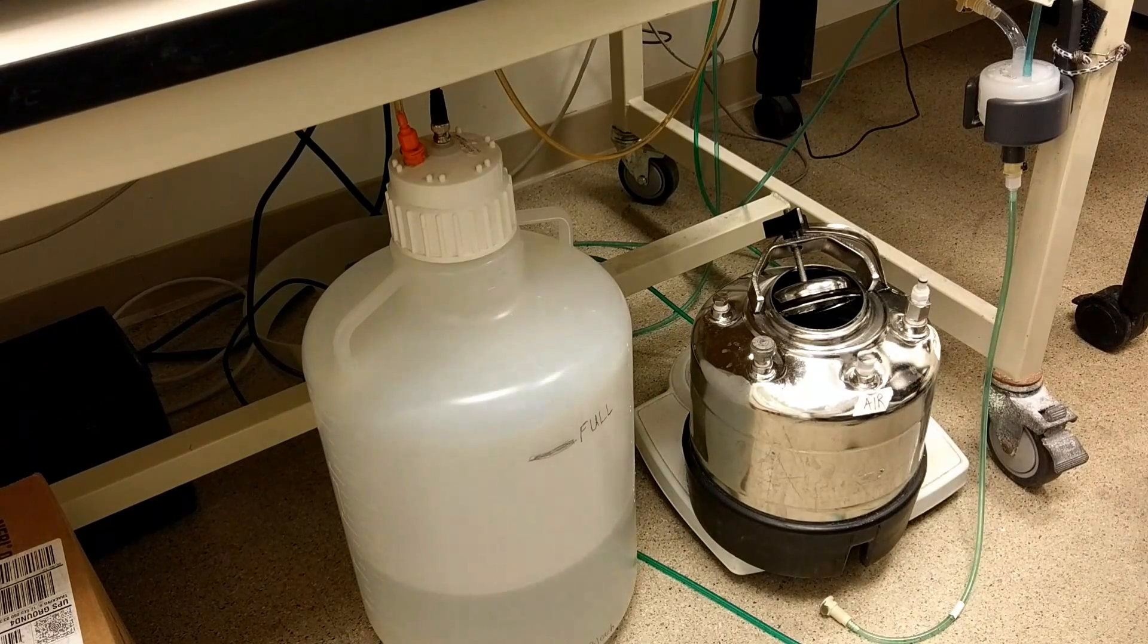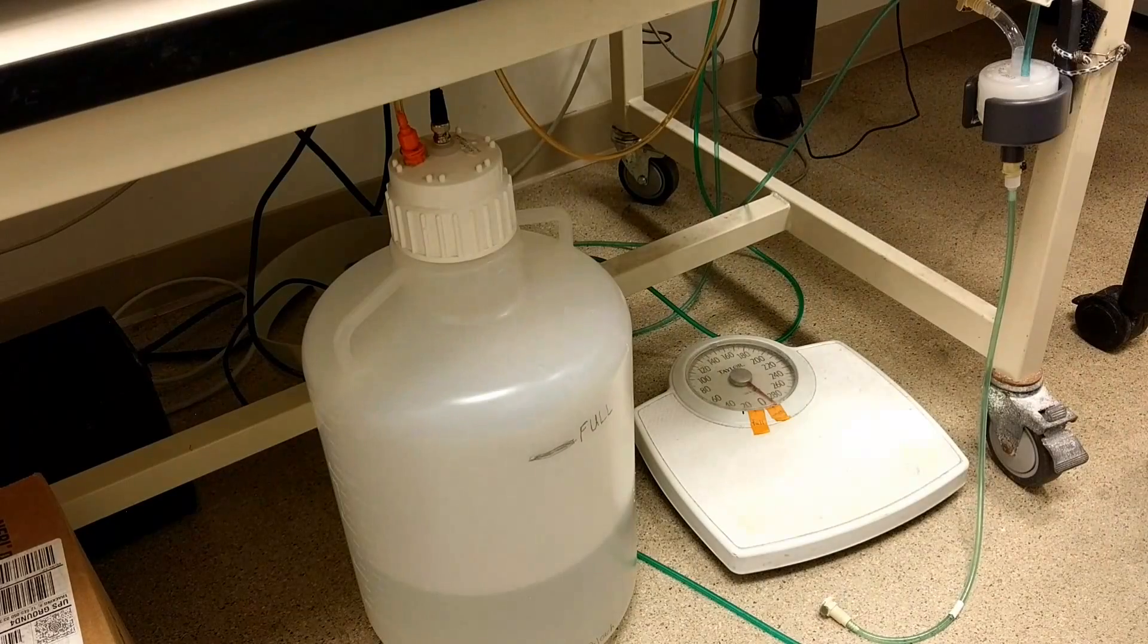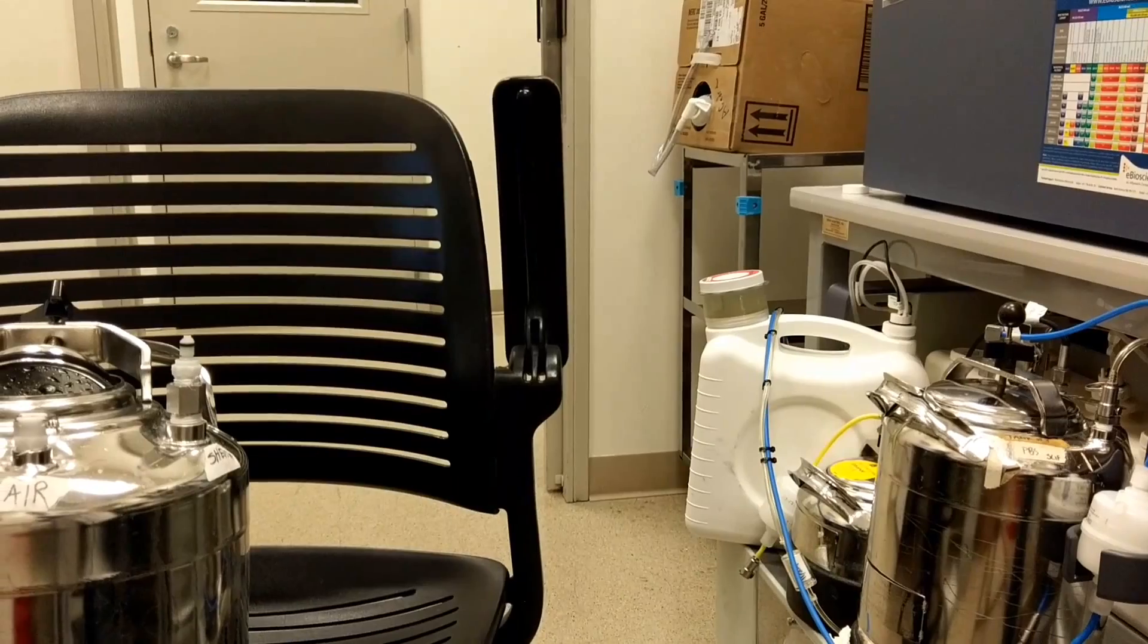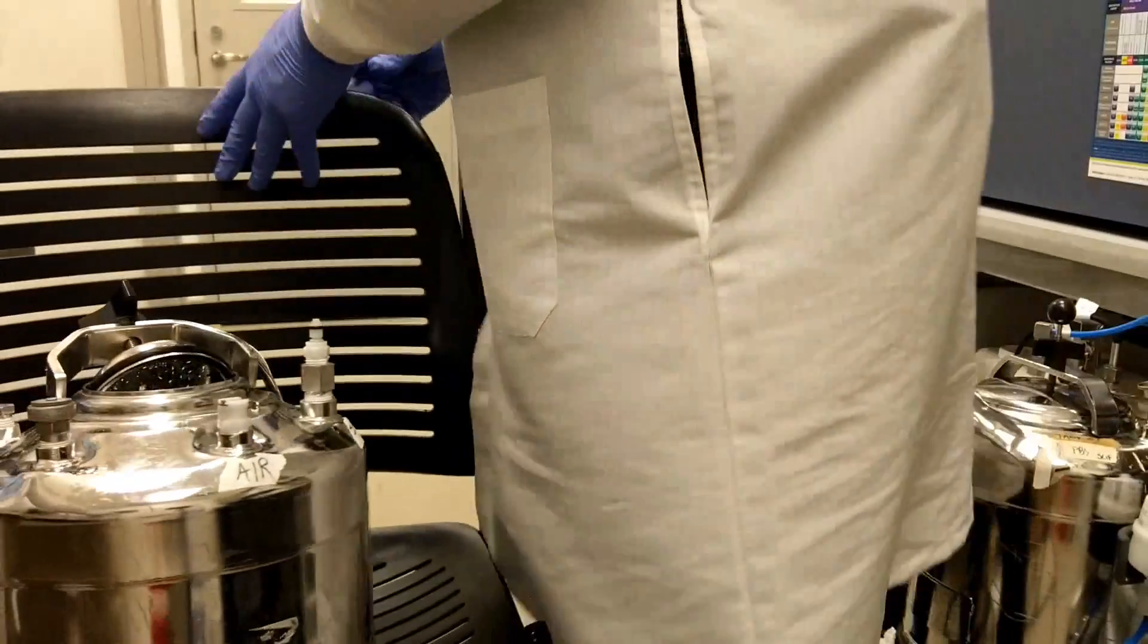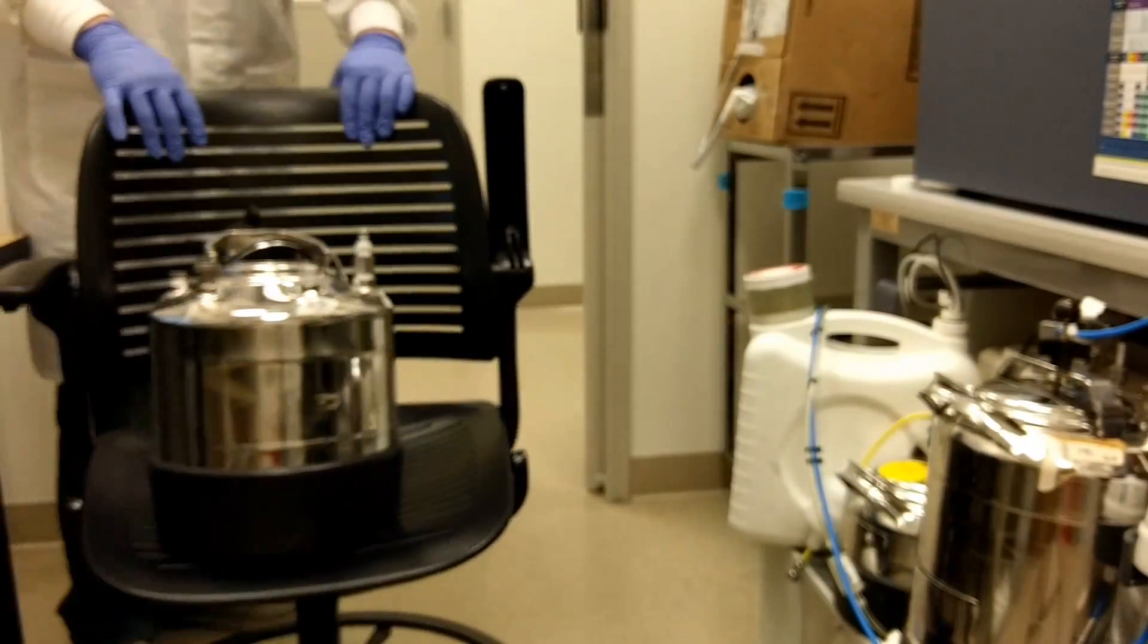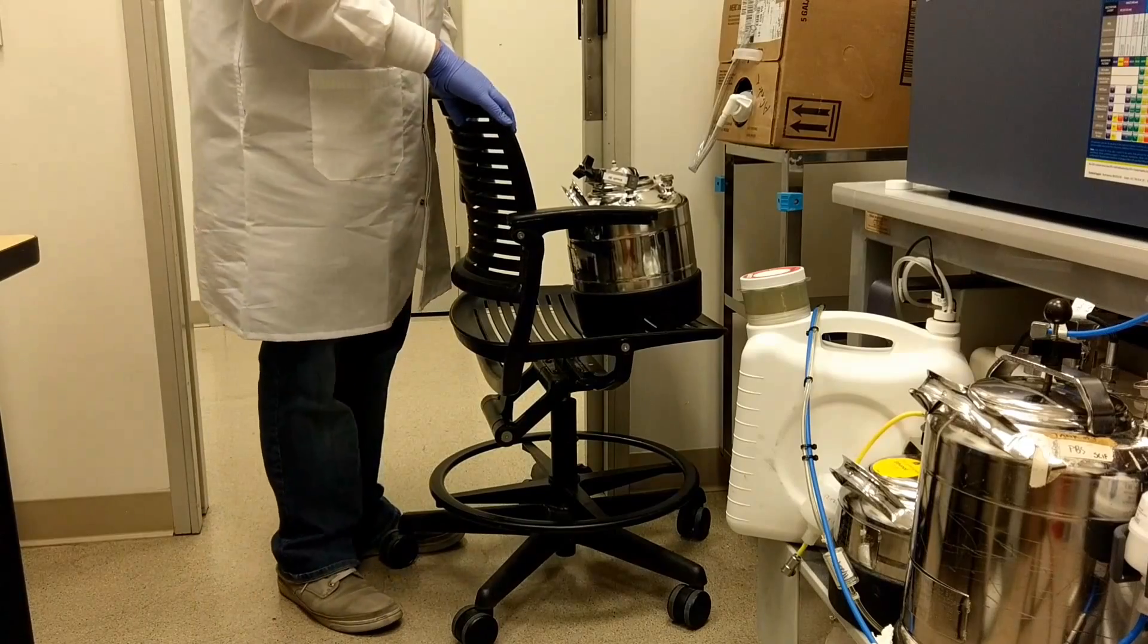I typically will pick up this tank and place it on a chair, and I'll wheel it over to the box of sheath fluid, which is Neural Diluent 2 - that's the name of the fluid.